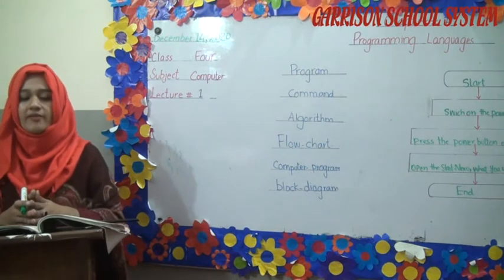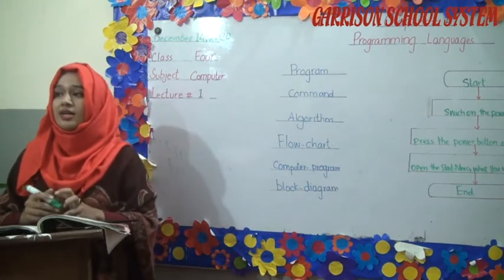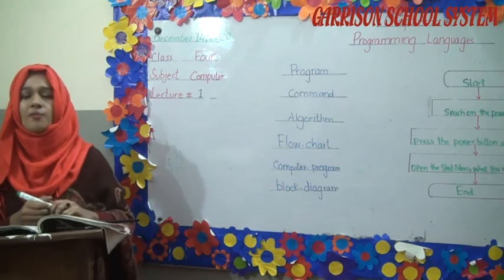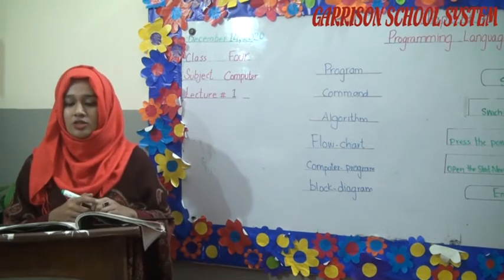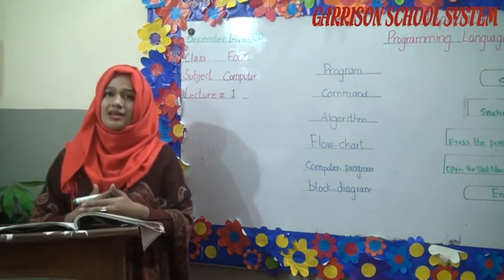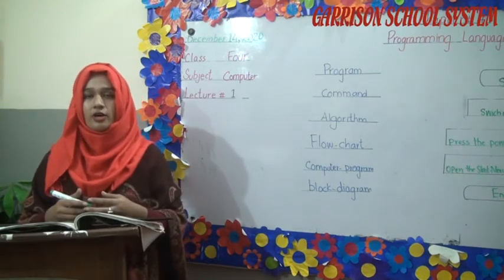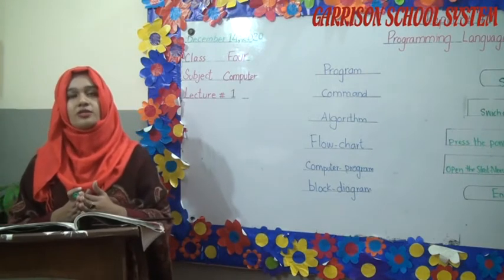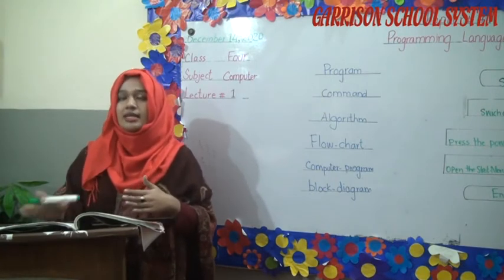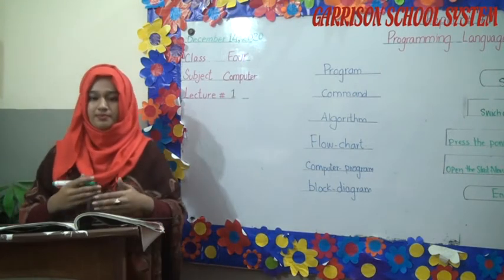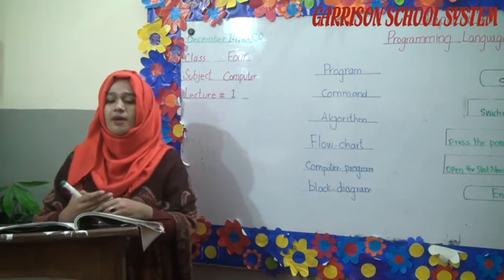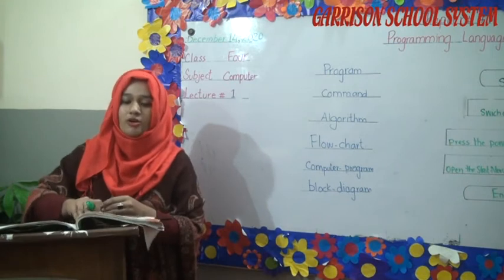Next, page number 55 activity: you have to write the algorithm as well as draw the flowchart for shutting down the computer. The shutdown steps include: click the start button on the taskbar, wait for the computer and select shut down, then switch off the system unit and switch off the main power supply. Once you follow these steps, your computer will be shut down.